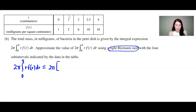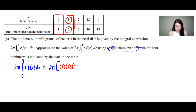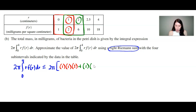So I'm writing 2π times the integral from 0 to 4 of r·f(r) dr is approximately equal to 2π times the sum of rectangle areas. For a right Riemann sum, each rectangle's area is base times height, using the right endpoint. The first rectangle goes from r = 0 to r = 1, with base 1, and height r·f(r) on the right: that's 1 times f(1) = 2. The next rectangle is from r = 1 to r = 2, with base 1, times 2 times f(2) = 6.